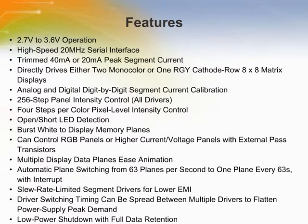From MAX6960 through MAX6963, these are compact cathode row display drivers that interface microprocessors to 8x8 dot matrix red, green, and yellow LED displays through a high-speed 4-Wire Serial Interface. It drives two mono-color 8x8 matrix displays or a single red-green-yellow 8x8 matrix display with no external components. The driver can also be used with an external pass transistor to control red, green, blue, and other displays at higher currents and voltages. It features open and short circuit LED detection and provides both analog and digital per-segment current calibration to allow 8x8 displays from different batches to be compensated or color matched.